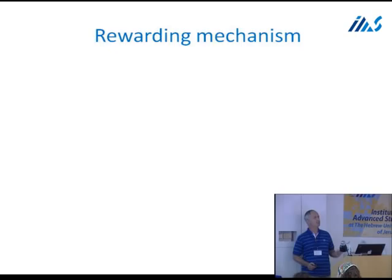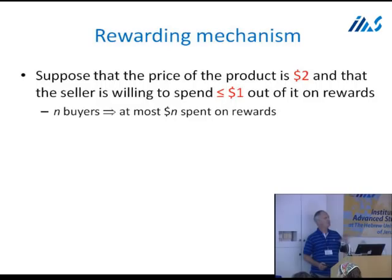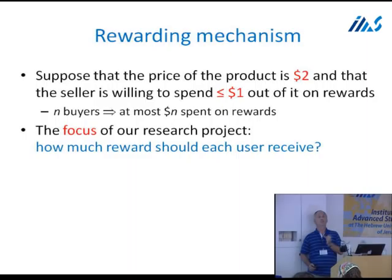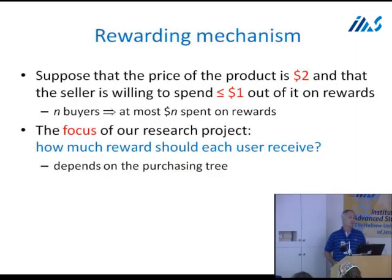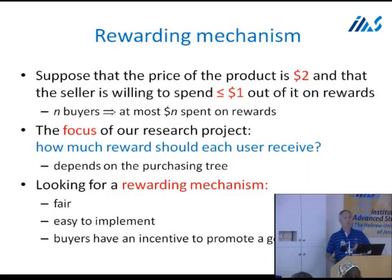Suppose the price of a product is $2, and the seller is willing to spend up to $1 of it on rewards. Think about it as: if there are N buyers, at most N dollars are spent on rewards. The focus of our research is how much reward each user should receive, which depends on the purchasing tree. We look for rewarding mechanisms that are fair, easy to implement, and give buyers incentive to promote a good product.